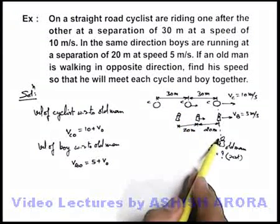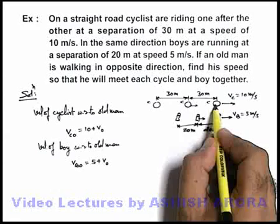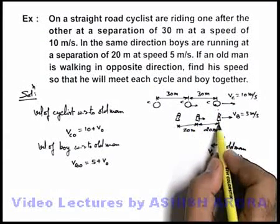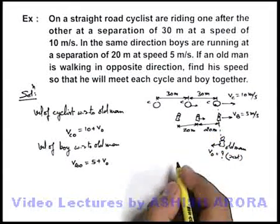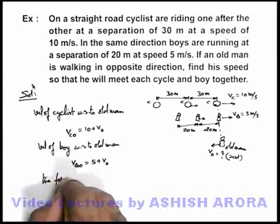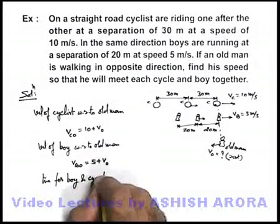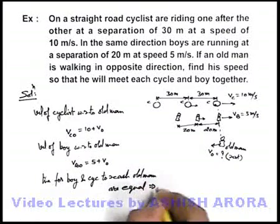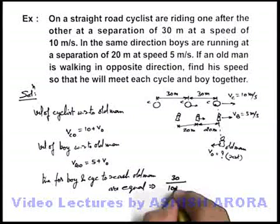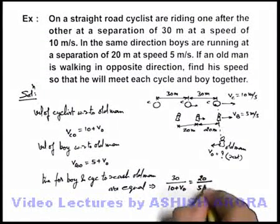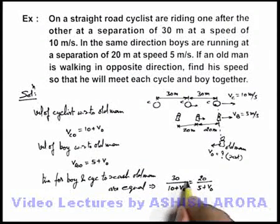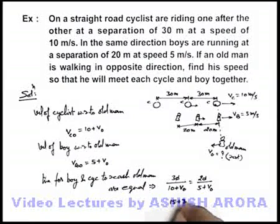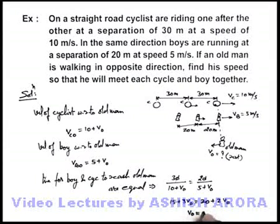Since they are going to meet the old man together, the time in which the cyclist covers 30 meters equals the time in which the boy covers 20 meters. So we write: 30 divided by (10 plus V_O) equals 20 divided by (5 plus V_O). Solving this: 15 plus 3V_O equals 20 plus 2V_O, which gives V_O equal to 5 meters per second. That is the velocity of the old man and the answer to our question.